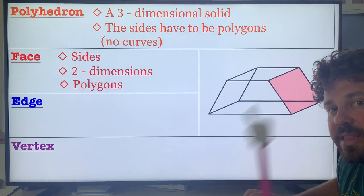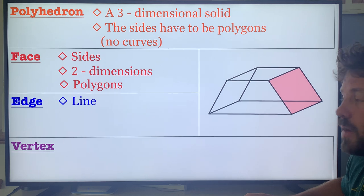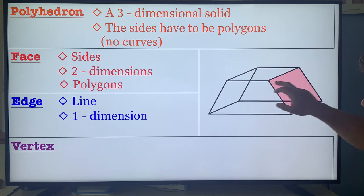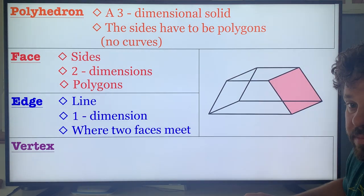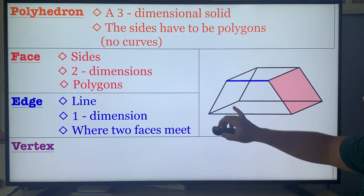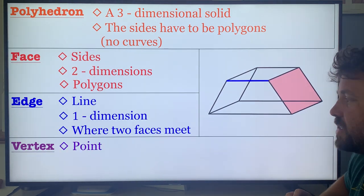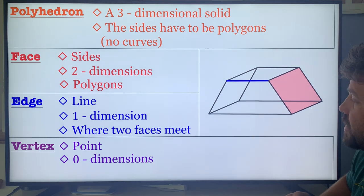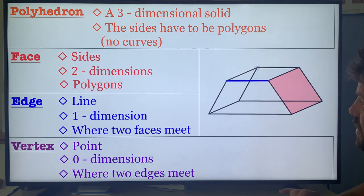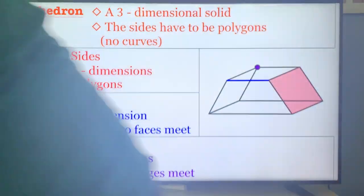Next piece is the edge — it is one-dimensional, and it's where two faces meet. On this figure, you can count twelve edges. And finally, the vertex is a point with no dimensions — that is where two edges meet. Where two lines or edges meet, that is your vertex. On this figure there are eight vertices: one, two, three, four, five, six, seven, and eight.